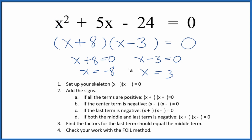So if you use the quadratic equation, you would get these same answers. This is Dr. B factoring the equation x squared plus 5x minus 24 equals 0. Thanks for watching.